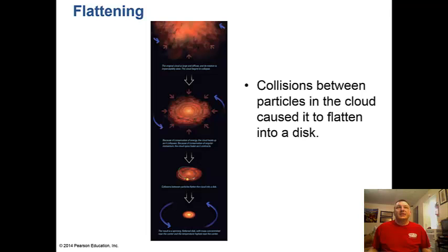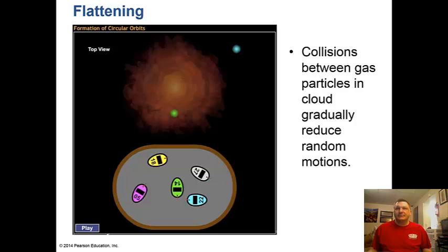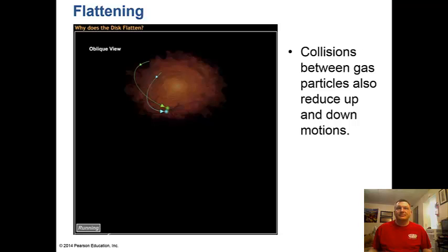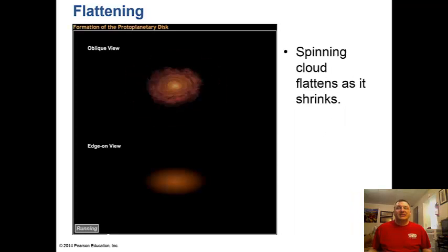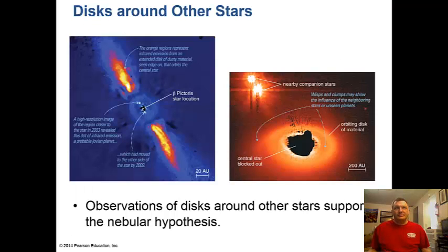The solar nebula was a big blob of gas and dust that started to spin and flattened out into a disk. Collisions between gas particles in the cloud gradually reduced random motions. The spinning cloud also flattens as it shrinks. Observations of disks around other stars support the nebula hypothesis.